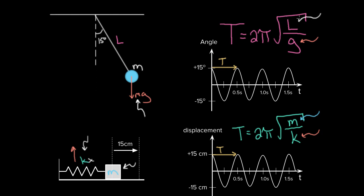Why does length L show up in the numerator? Increasing the length of a pendulum increases its rotational inertia, but increasing length does not increase the force of gravity. Technically, rotational inertia is proportional to length squared, but the torque is only proportional to length — that's why only one L appears. In short, a longer pendulum has more inertia and takes longer to complete a full cycle. This is why longer swings at the park feel slower than short ones.